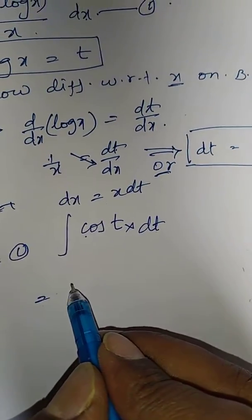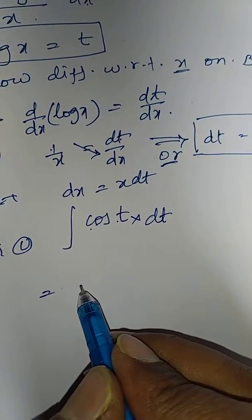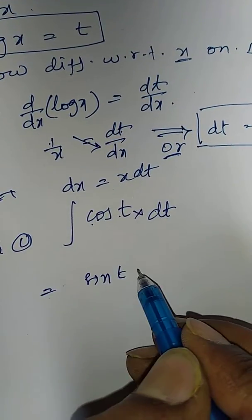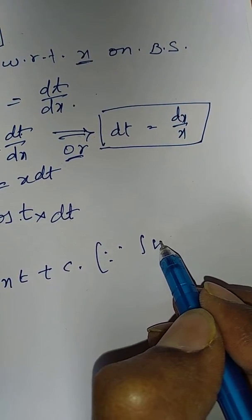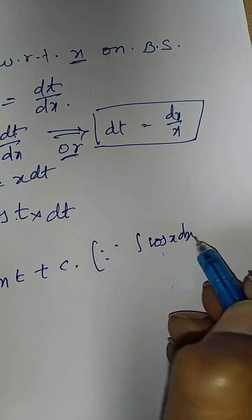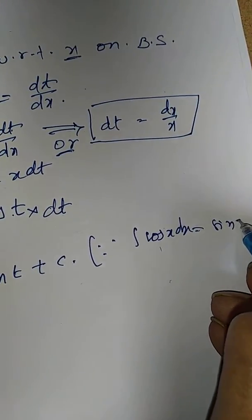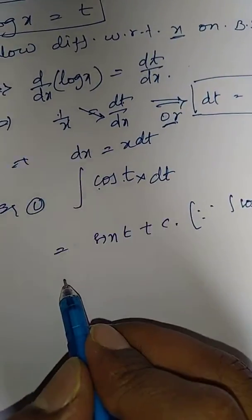That is equal to integration of cos t dt is sin t plus c, since integration of cos x dx is sin x plus c.